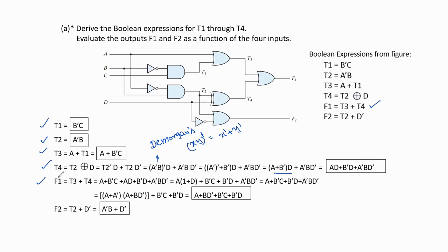Now we find the output variable f1. f1 = t3 + t4, so we substitute the t3 and t4 expressions. t3 = a + b'c, and t4 = a·d + b'd + a'b·d'. Therefore f1 = a + b'c + a·d + b'd + a'b·d'.